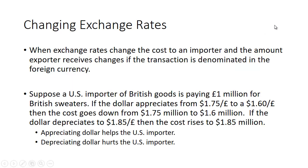Let's take a quick look at what happens when exchange rates change. In a floating rate system, prices change, so how much an importer or exporter pays or receives will change with the exchange rate. Suppose a US importer of British sweaters is paying one million pounds. If the dollar appreciates from $1.75 per pound to $1.60 per pound — meaning it takes fewer US dollars to buy one pound — the cost goes down from $1.75 million to $1.60 million.